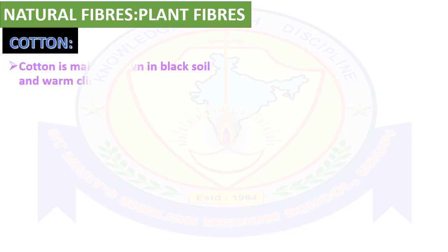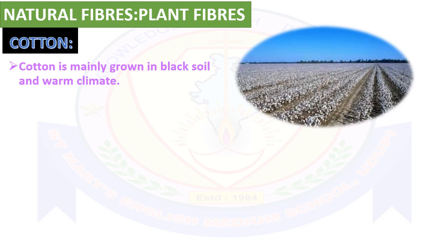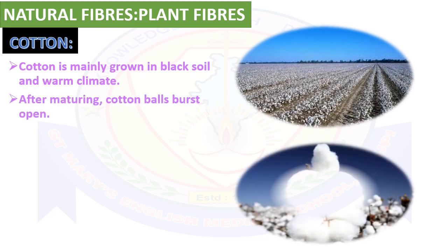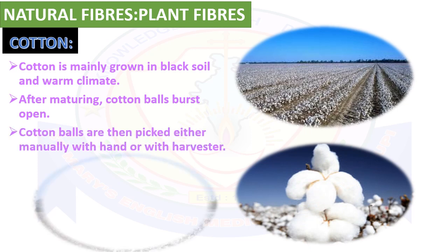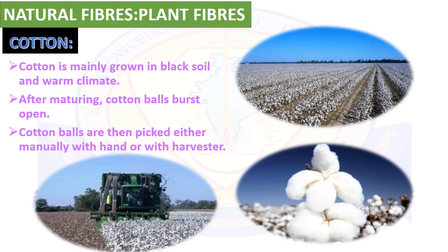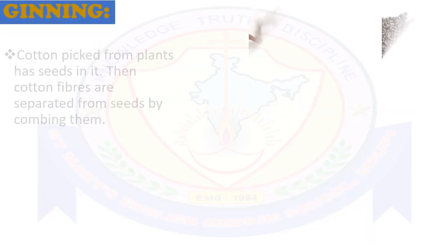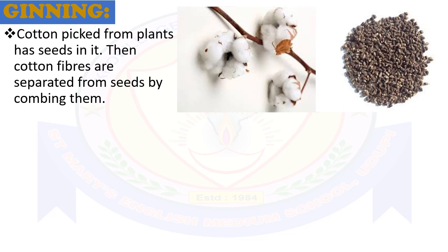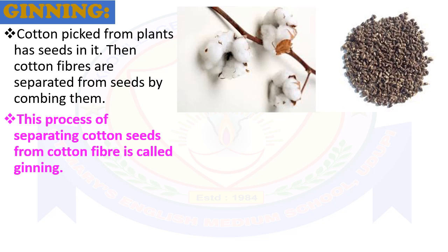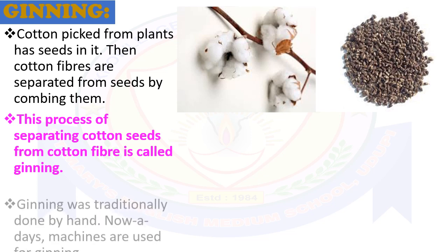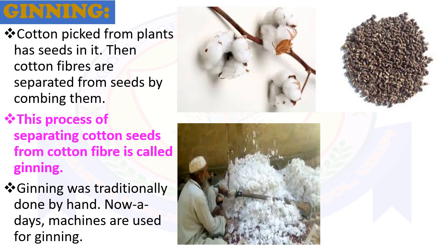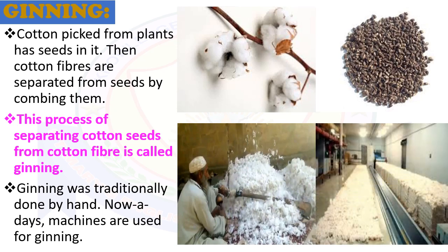Let's take cotton first. Cotton is mainly grown in black soil and warm climate. After maturing, cotton balls burst open and are then picked either manually by hand or with harvesting machines. Cotton picked from plants has seeds in it. The cotton fibers are separated from seeds by combing — this process is called ginning. Ginning was traditionally done by hand, but nowadays machines are used.